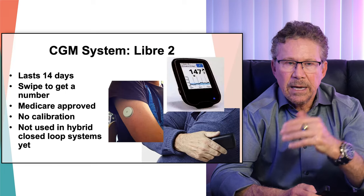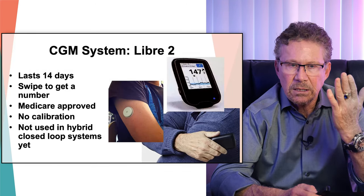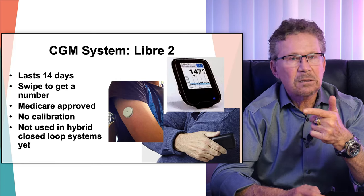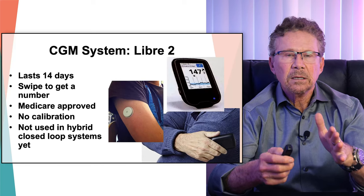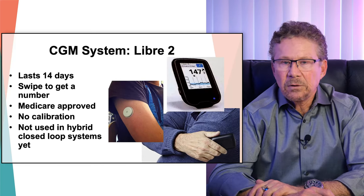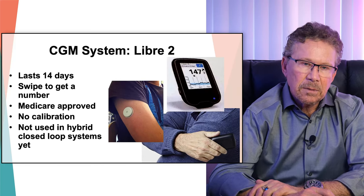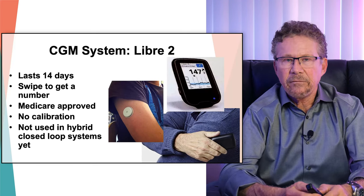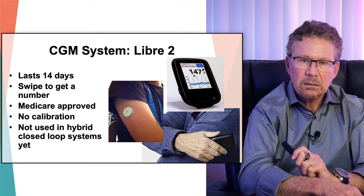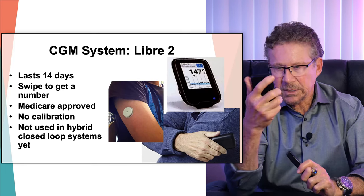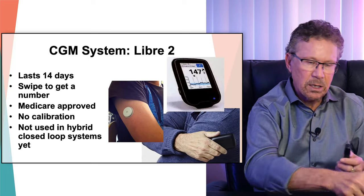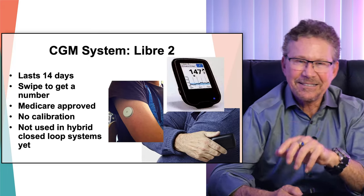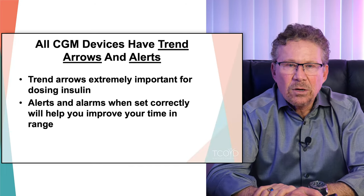The Libre 2 now has alerts and alarms, lasts 14 days, and doesn't require calibration. It's eventually going to hook up to insulin pumps — not at the current time, but that will come. The Libre 3 is coming and is an improvement over the Libre 2. They call the Libre 2 a flash system because you swipe the monitor over the Libre sensor — but I forgot, you guys are advanced, so you probably already know that.